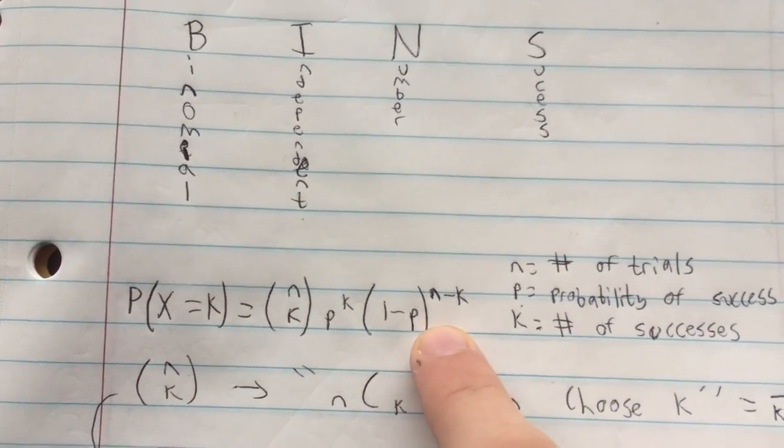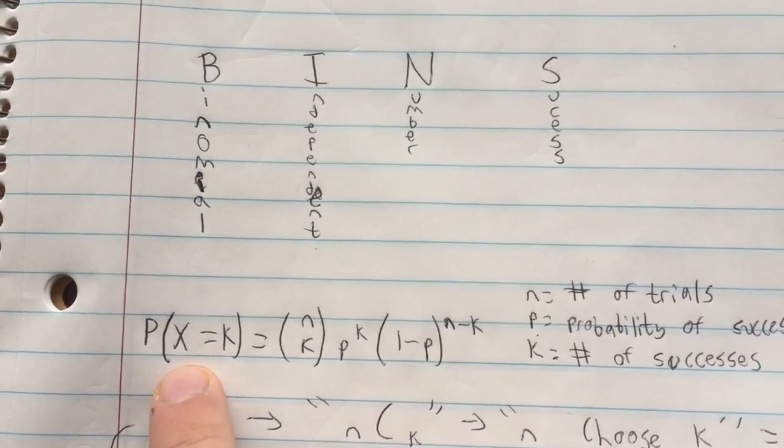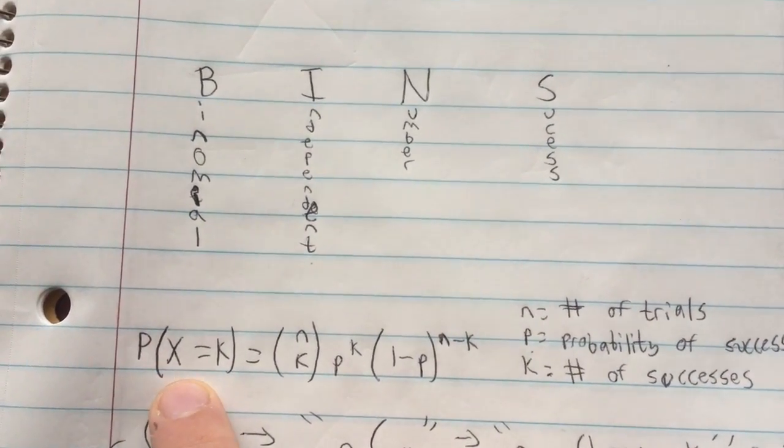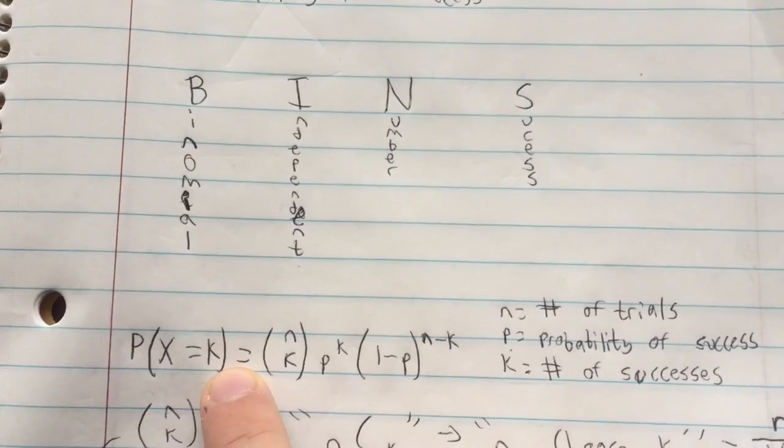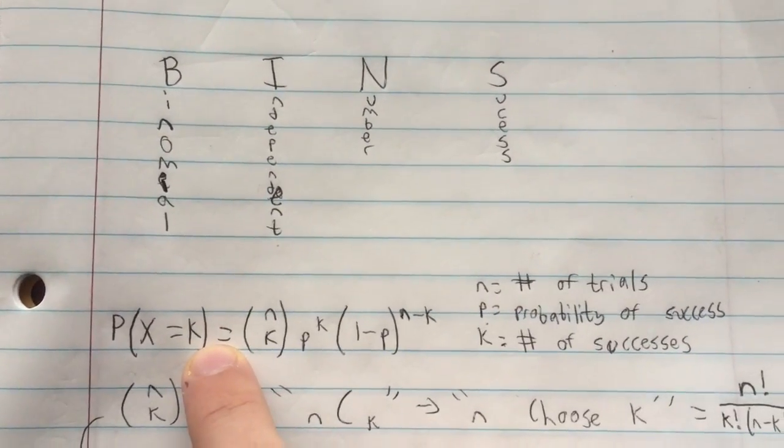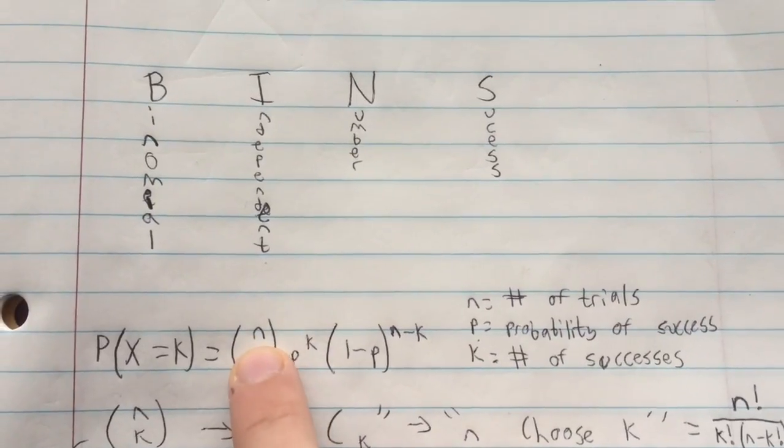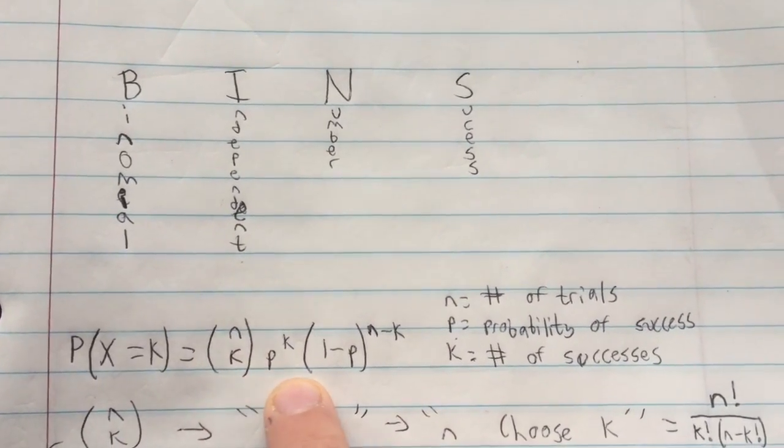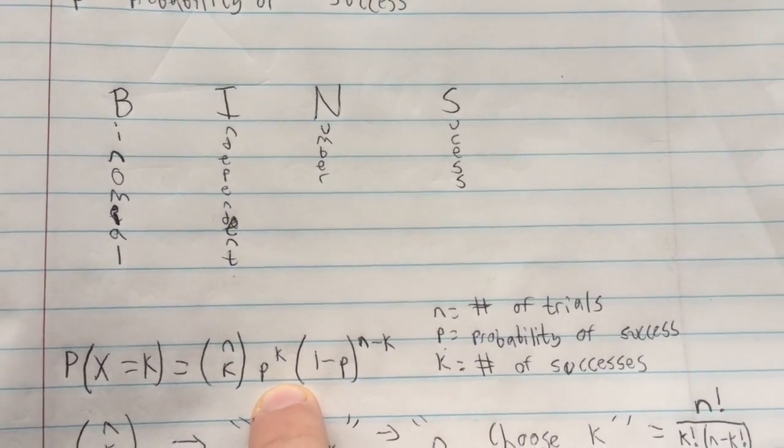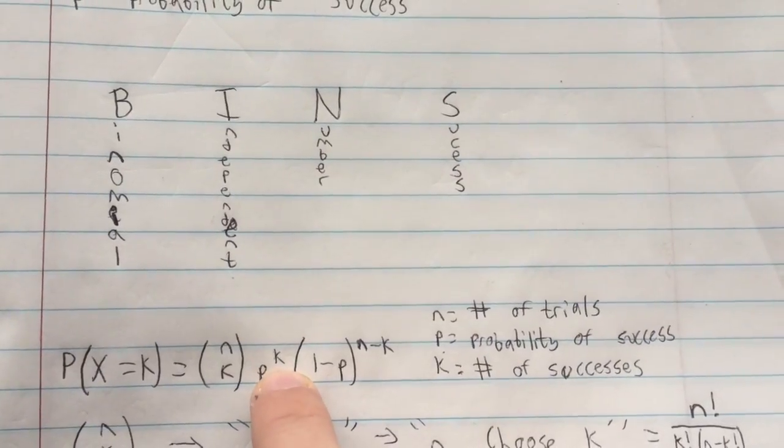As far as performing inference goes, we can say the probability that the number of successes equals the set value which we abbreviate as K. It will be this variable, which we don't need to focus on right now. The probability of success to the power of the number of successes.